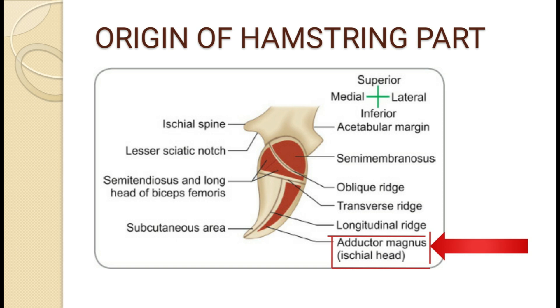Therefore, it is also considered among the hamstring muscles. The nerve supply is from the tibial part of the sciatic nerve, and the action is flexion of the knee and extension of the hip — these are the characteristics of the hamstrings.